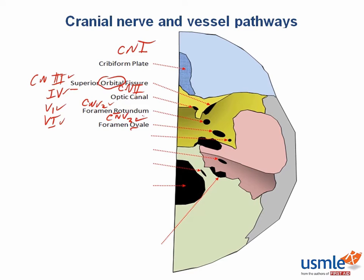The last foramen in the sphenoid bone is the foramen spinosum. This is actually not for cranial nerves, but the middle meningeal artery passes through here, so you should definitely know about it. Another mnemonic that may help you is ROS — which usually stands for review of systems — but here: rotundum, ovale, and spinosum.